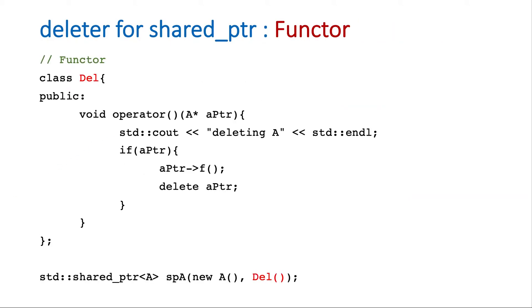Now let's see the functor. So here we define a class where we define the parenthesis operator. And it will take a pointer of the same type as we are creating the shared pointer. And the function body remains exactly the same as the earlier case.